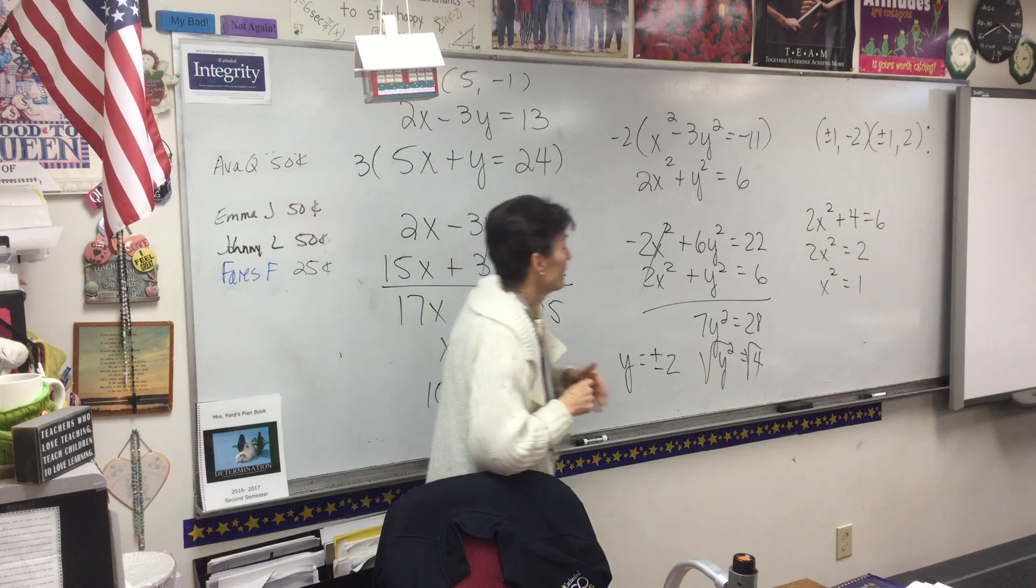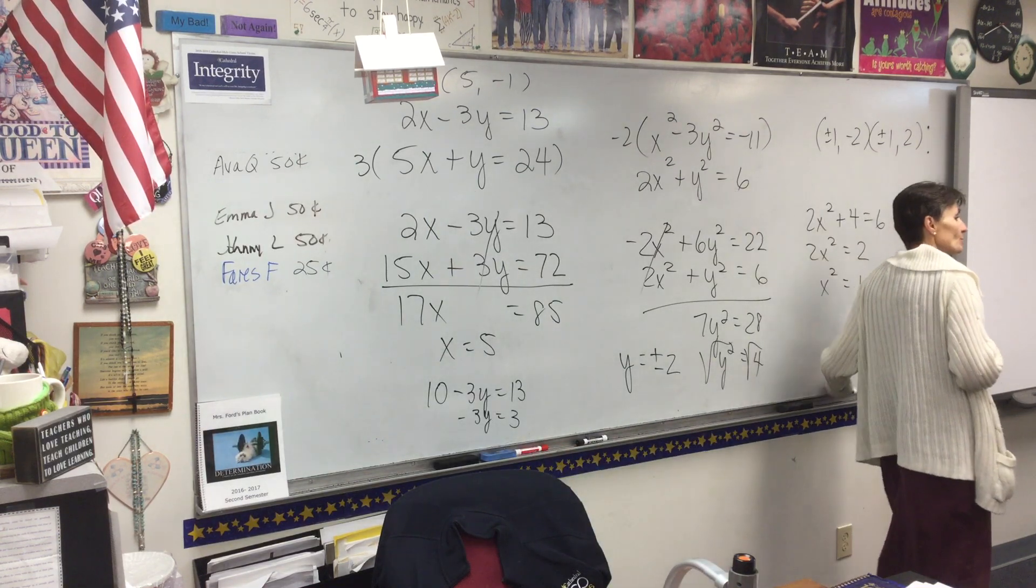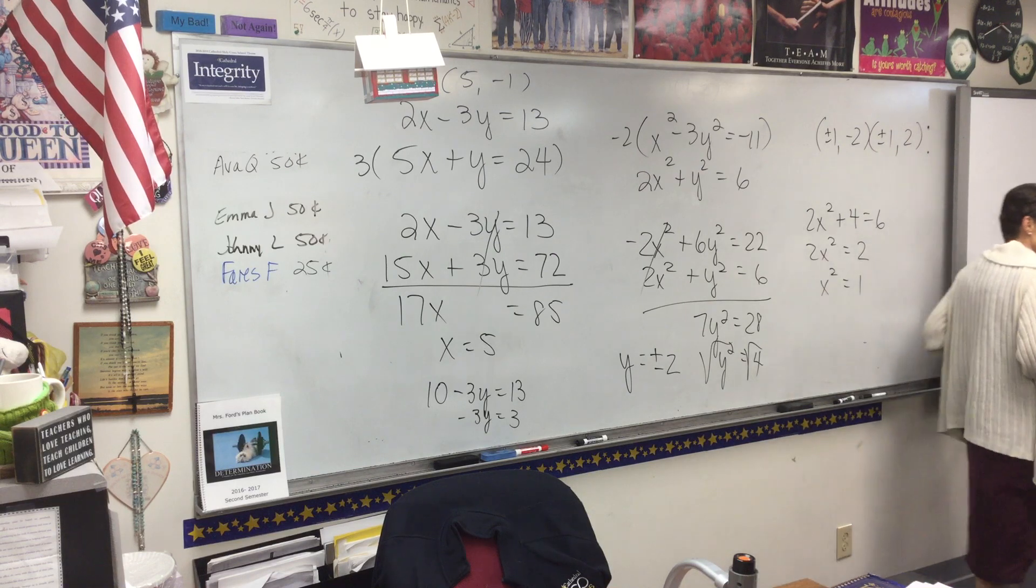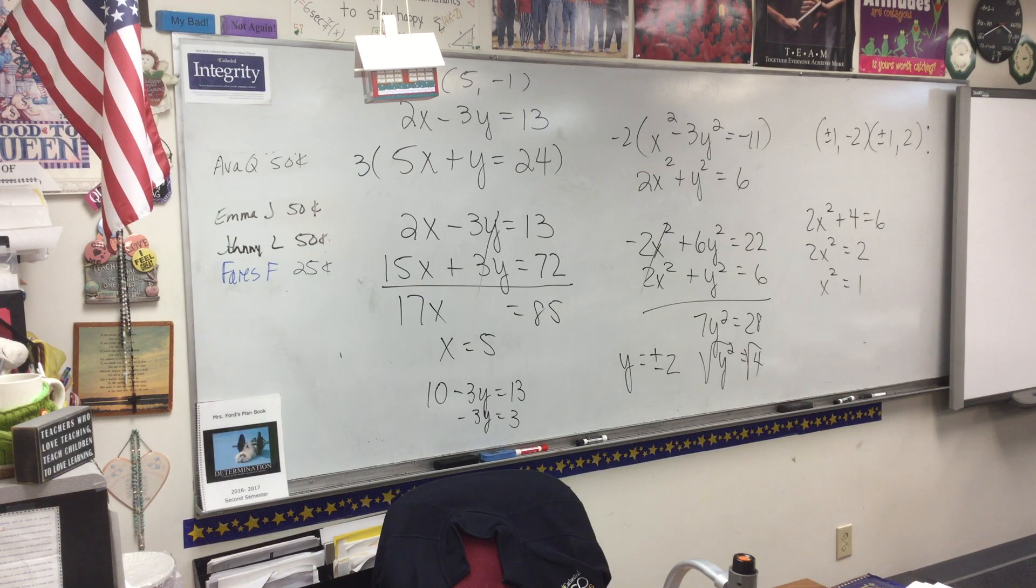So how many points of intersection did I have here? 4. 1 comma negative 2, negative 1 comma negative 2, 1 comma 2, and negative 1 comma 2. So 4 points of intersection. Okay, we will pick up here next time I see you, which Lord knows when that is.